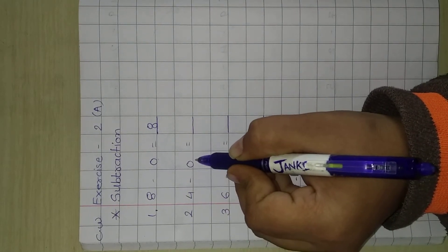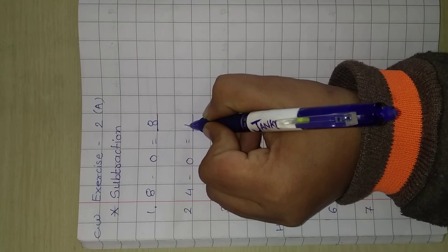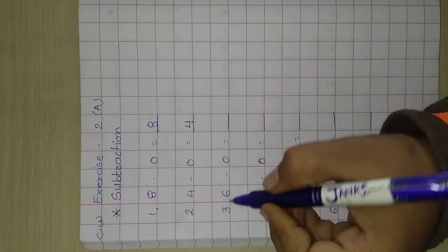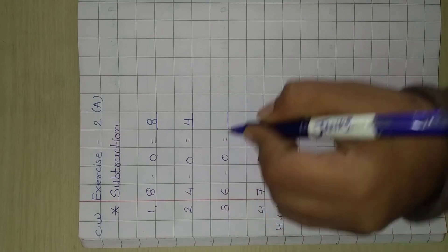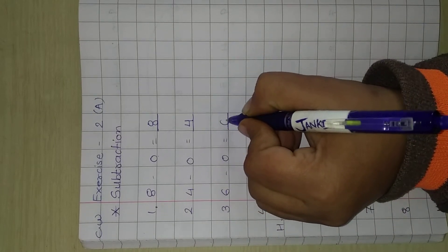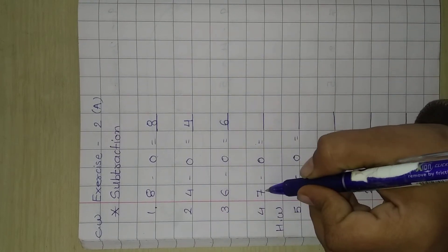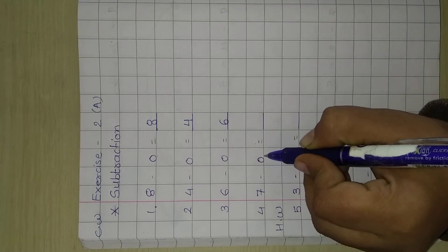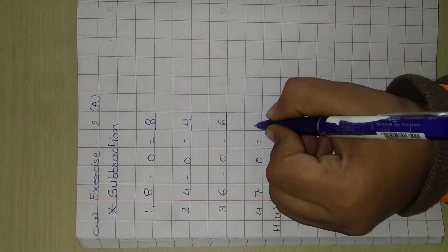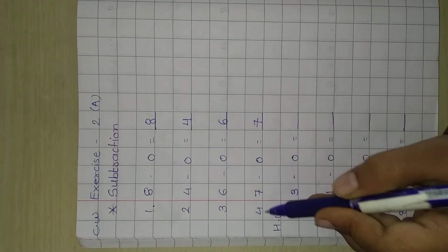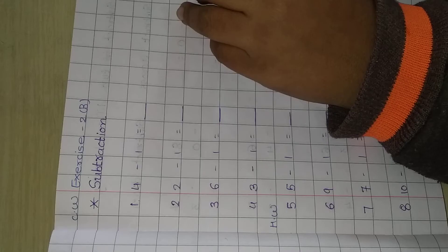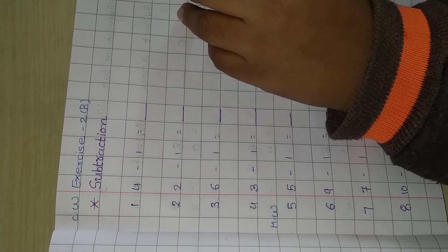Next, 4 minus 0, our answer is 4. Next, 6 minus 0, our answer is 6. 7 minus 0, our answer is 7. Now these are in classwork and next are in homework.